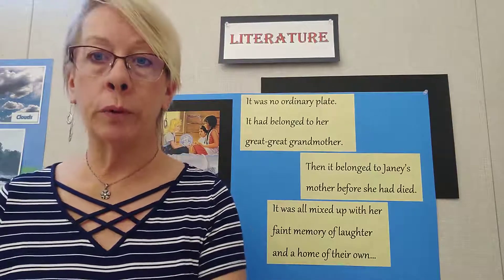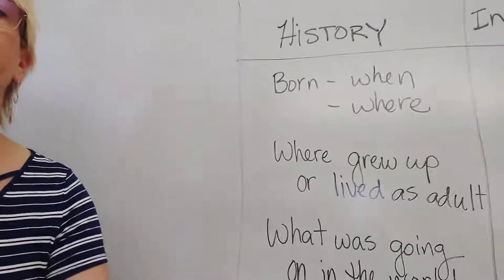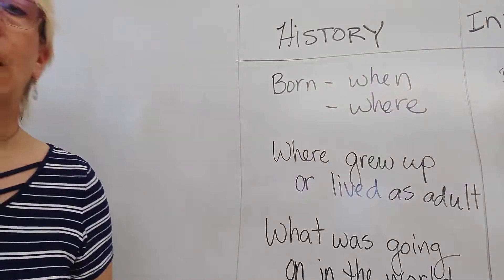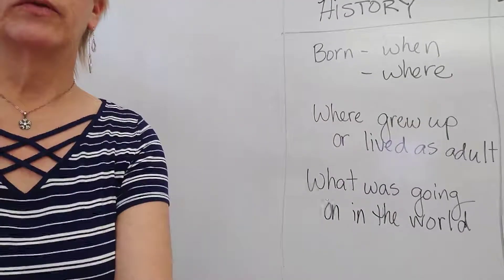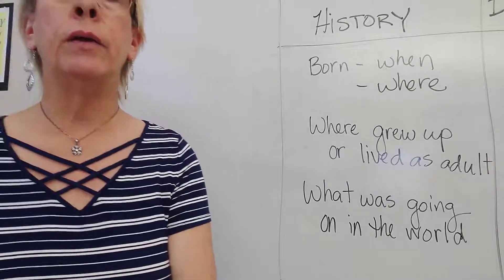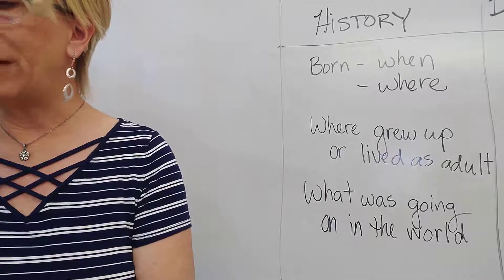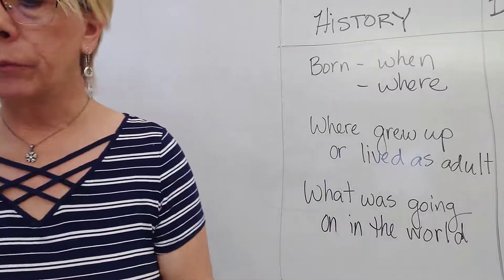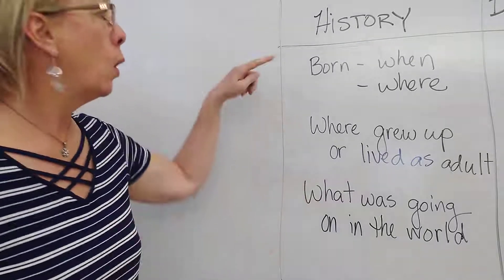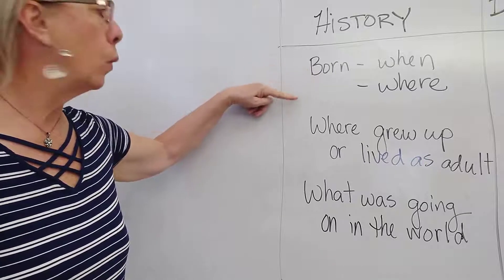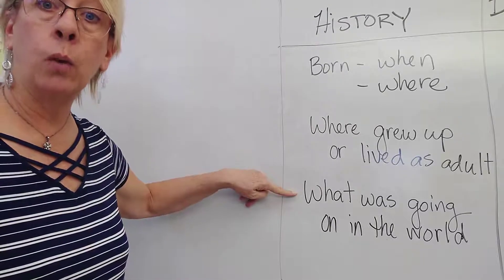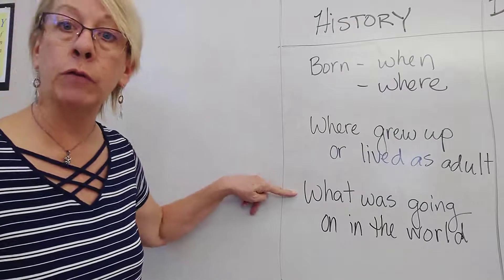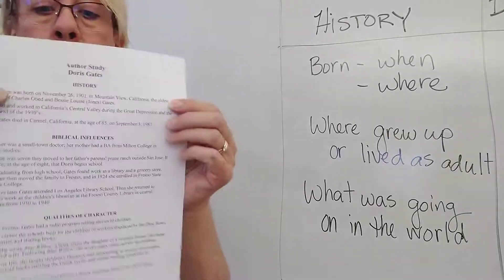Let's first talk about what we put on a key individual chart. Let's go over to the board and look at the first column. The first column is history. I don't want you to write these things down — this is just the types of things that go in this column. We're going to read our information page and look for the right information to put in this column.